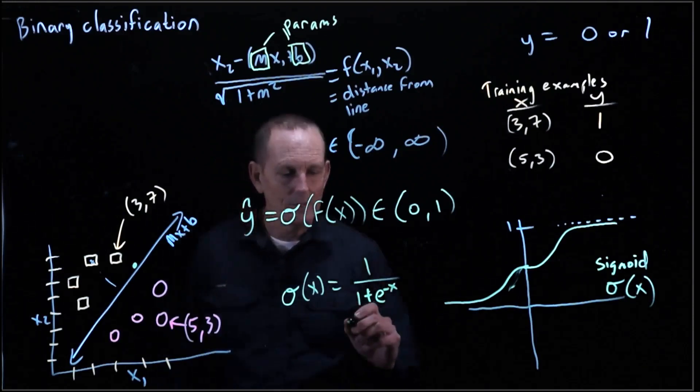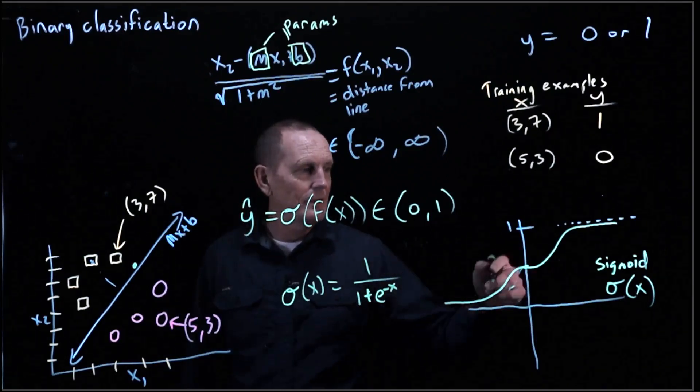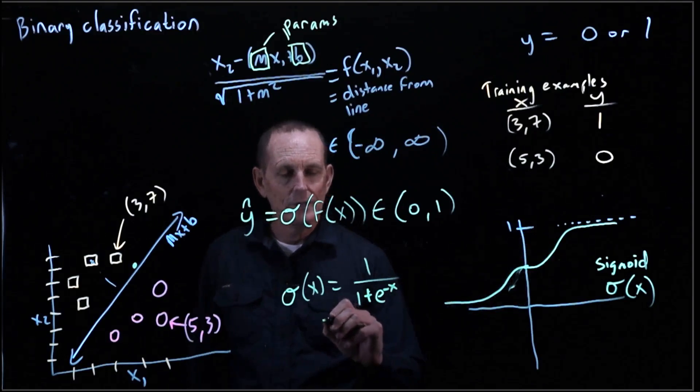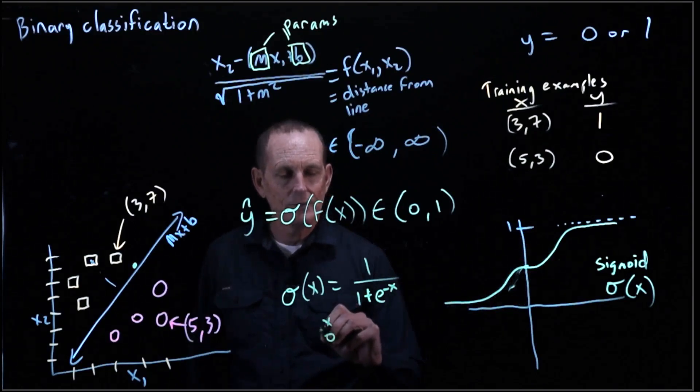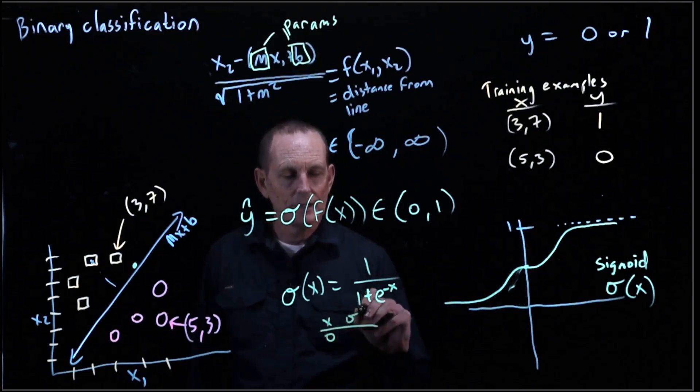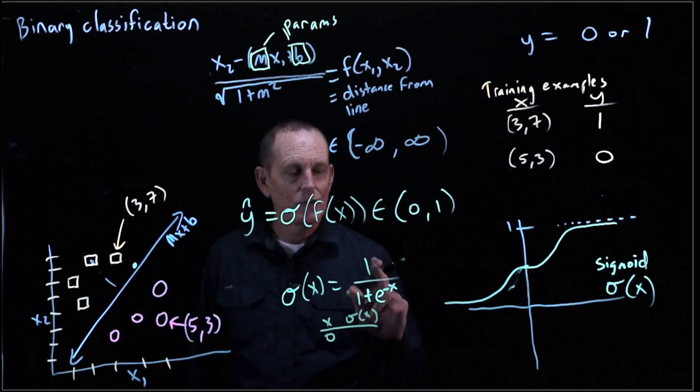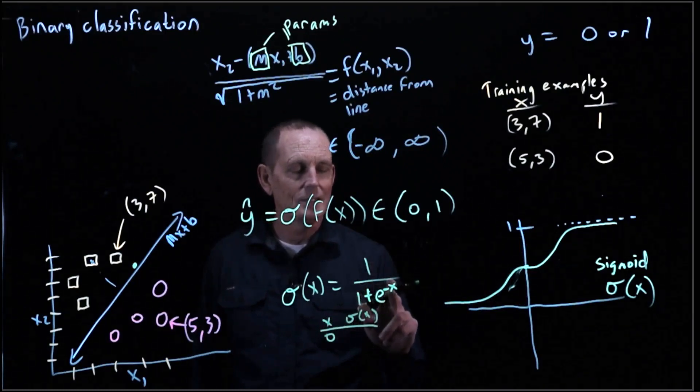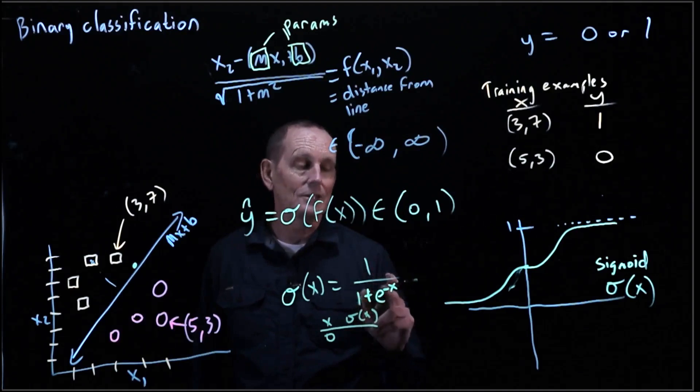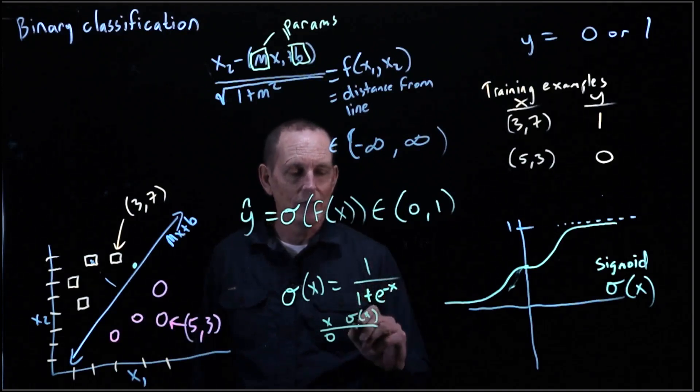And let's just look at a little table and see whether that satisfies us. So if x is 0, sigmoid of x is 1 over 1 plus e to the 0 or negative 0, same thing. e to the 0 is 1, so that's 1 half.